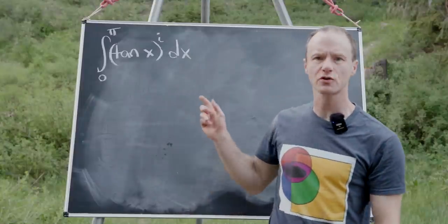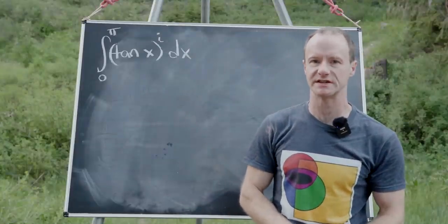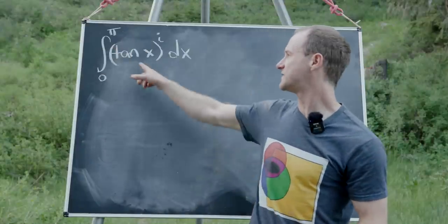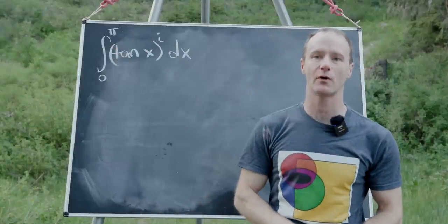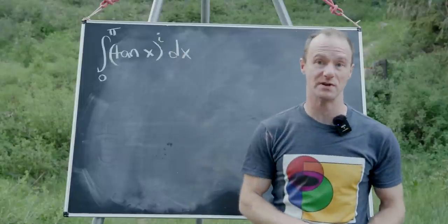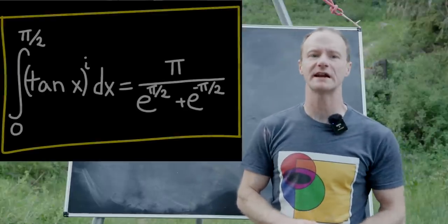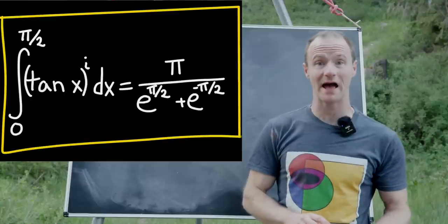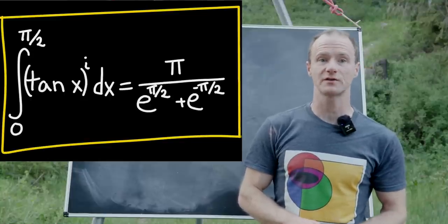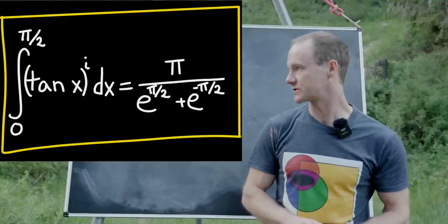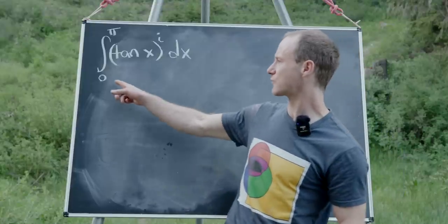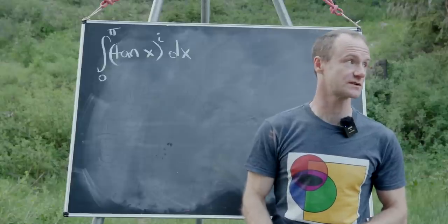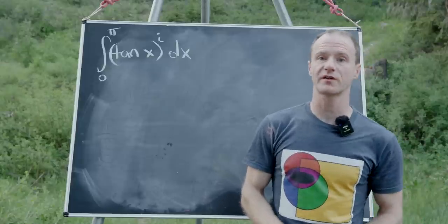In a previous video I calculated an integral which is pretty similar to this one. It was the integral from 0 to π/2 of tangent x to the i-th power dx, where i means the square root of minus 1. We got that integral equals π divided by e^(π/2) plus e^(-π/2). It turns out if you extend the region of integration from 0 to π, you get an even nicer result.